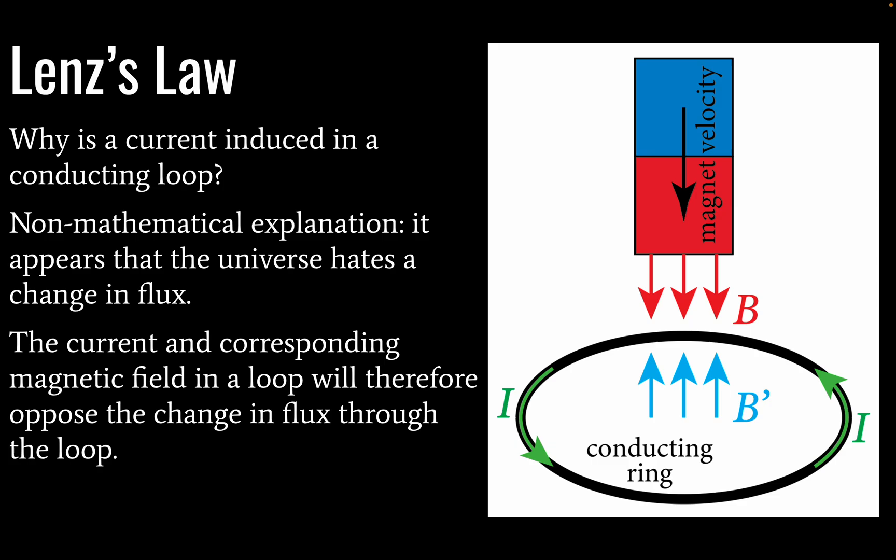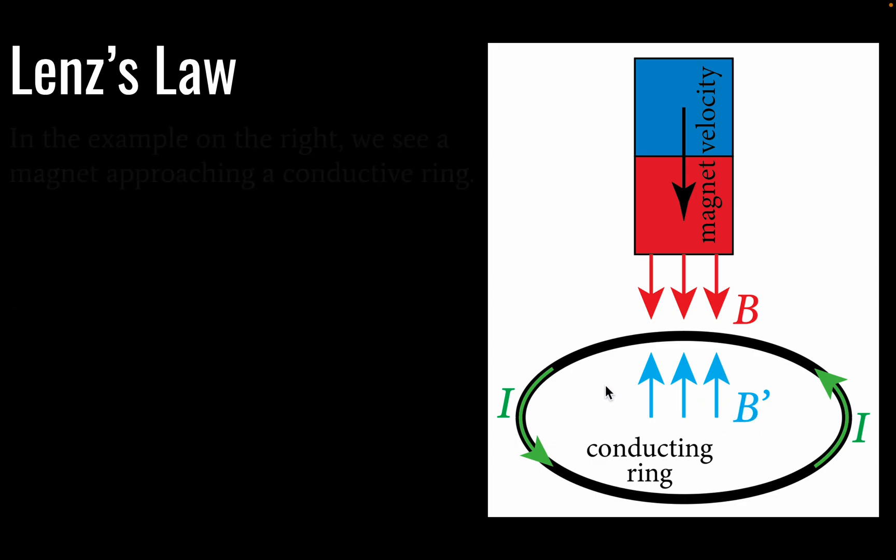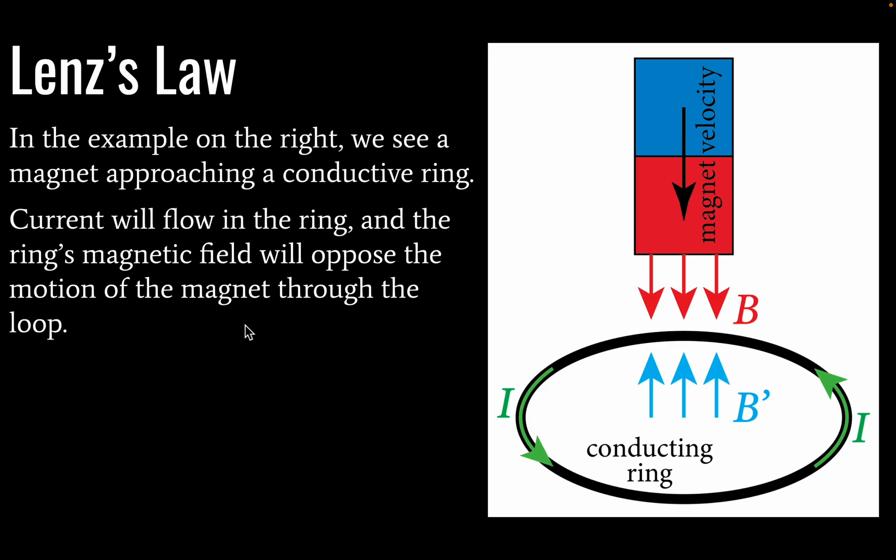So the current and corresponding magnetic field in a loop is therefore going to oppose the change in flux through a loop. So here we have an induced current in this loop and you can see an induced magnetic field, which I've called B prime here. So here's our magnet. It's dropping through our loop and our magnetic field strength is increasing through the loop, which the universe does not like. So it induces an equal and opposite magnetic field.